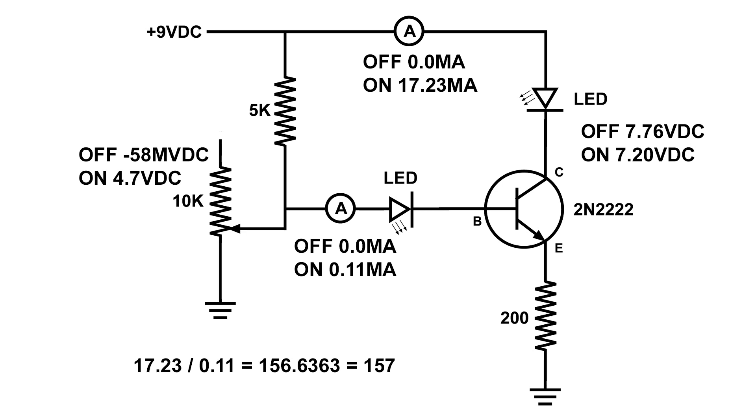Transistors are mainly current devices, and you can see that if you take a look at the voltages again. The voltage on the base changed quite a bit, but it didn't change that much on the collector-emitter circuit on the transistor. But the current sure did.